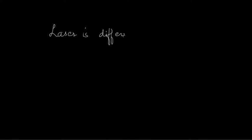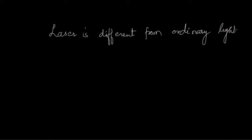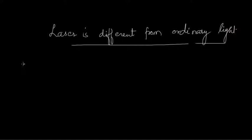The first most important difference is that ordinary light emits radiation in all directions, whereas laser is highly directional. Ordinary light is like the tube light or bulb we see in our day-to-day life which we use in our homes and offices. But laser is highly directional. Another important difference is that laser light is highly intense.